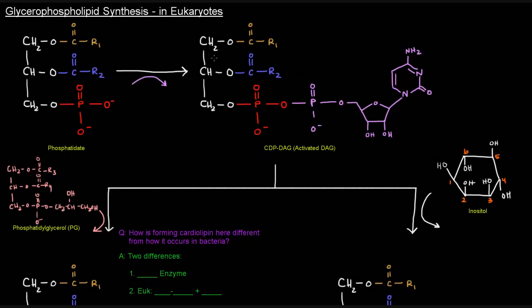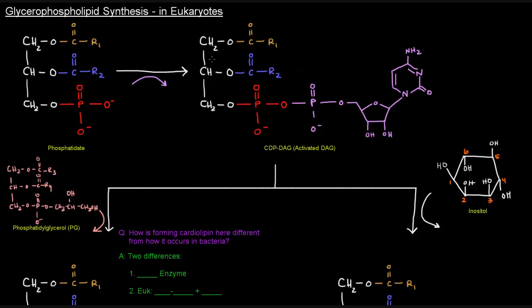So let's talk about eukaryotes and how glycerophospholipids are made in them, since we already talked about prokaryotes. We know that eukaryotes can do both Methods 1 and 2 to make their glycerophospholipids. Since we talked about Method 1 with the prokaryotes, let's just continue by talking about Method 1 here. So we'll take phosphatidate.